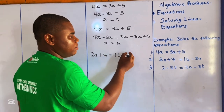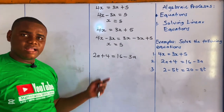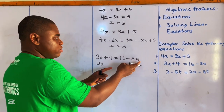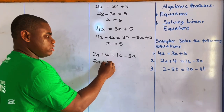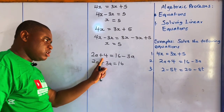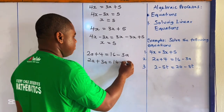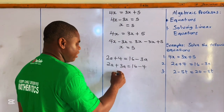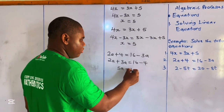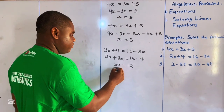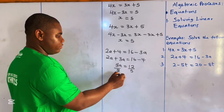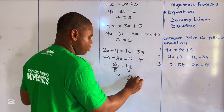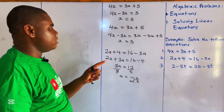For equation number two, we have 2a plus 4 equals 16. We subtract 4 from both sides, then combine terms to get 5a equals 12. Dividing both sides by 5 gives us a equals 2 and 2 over 5.